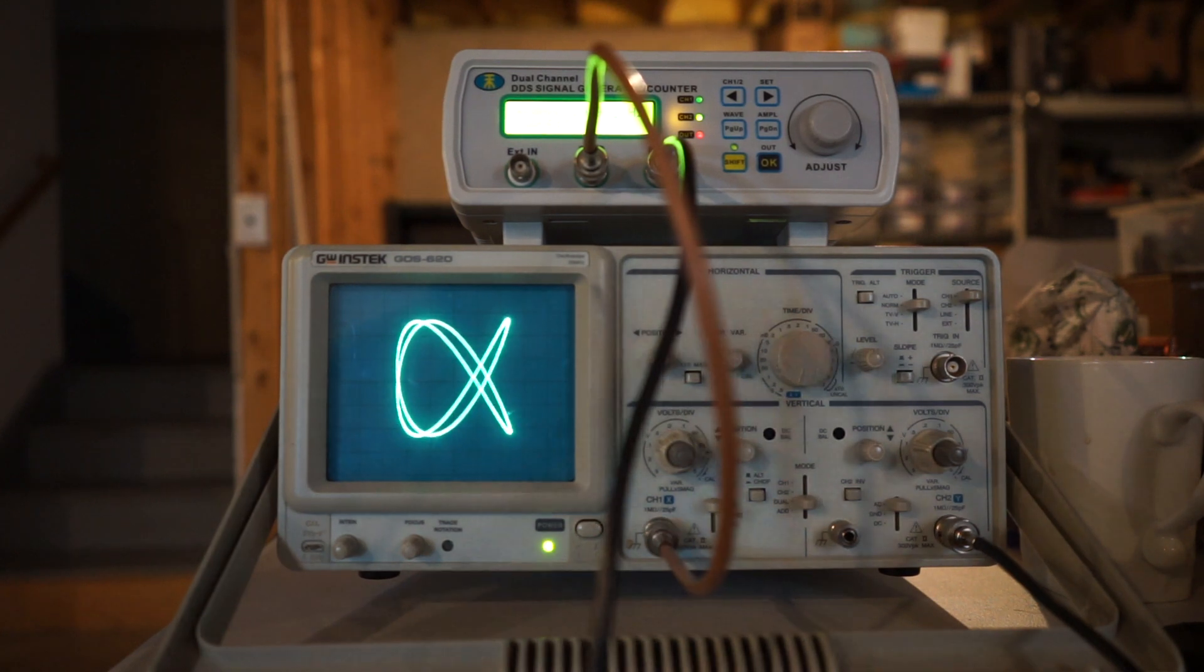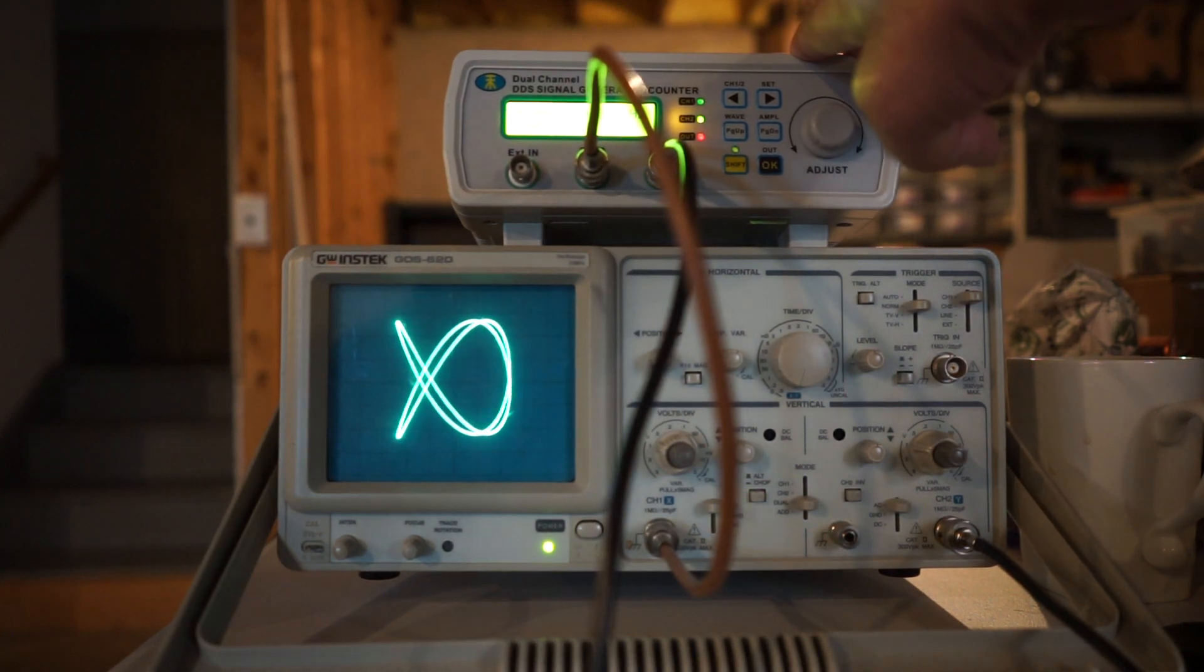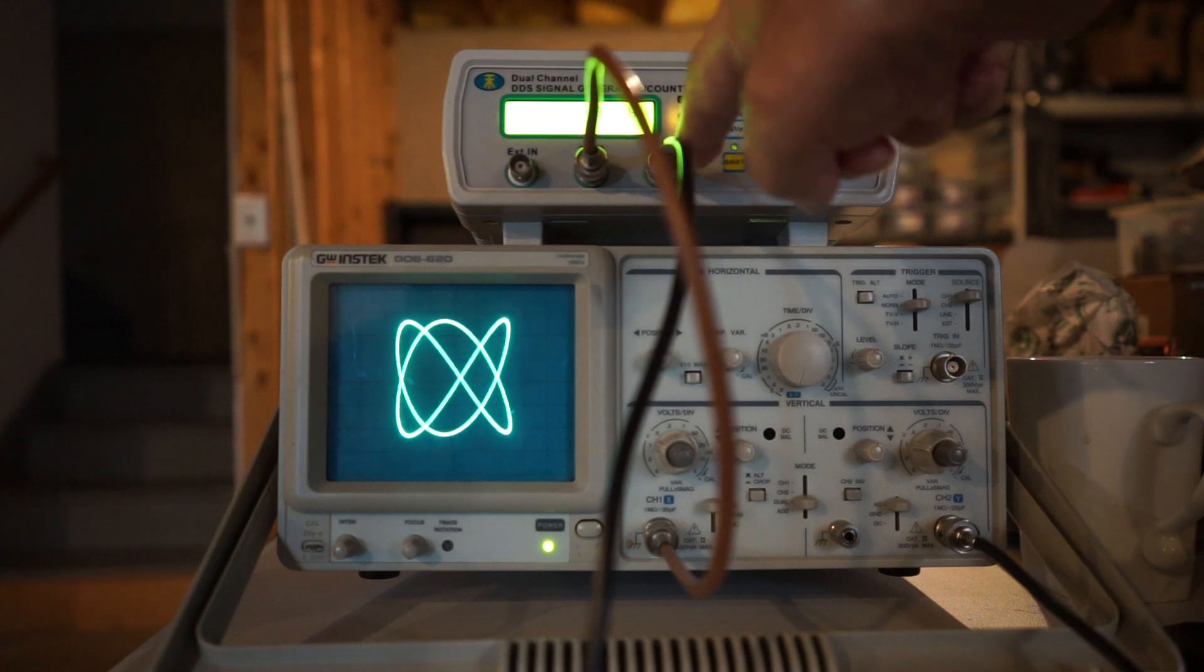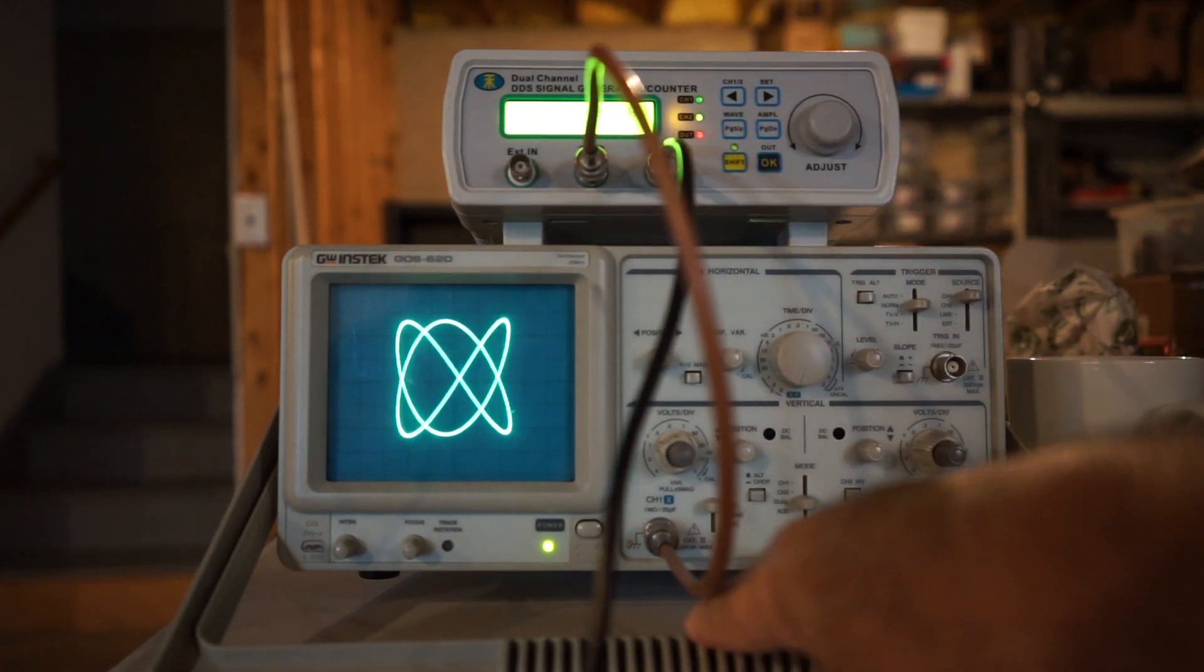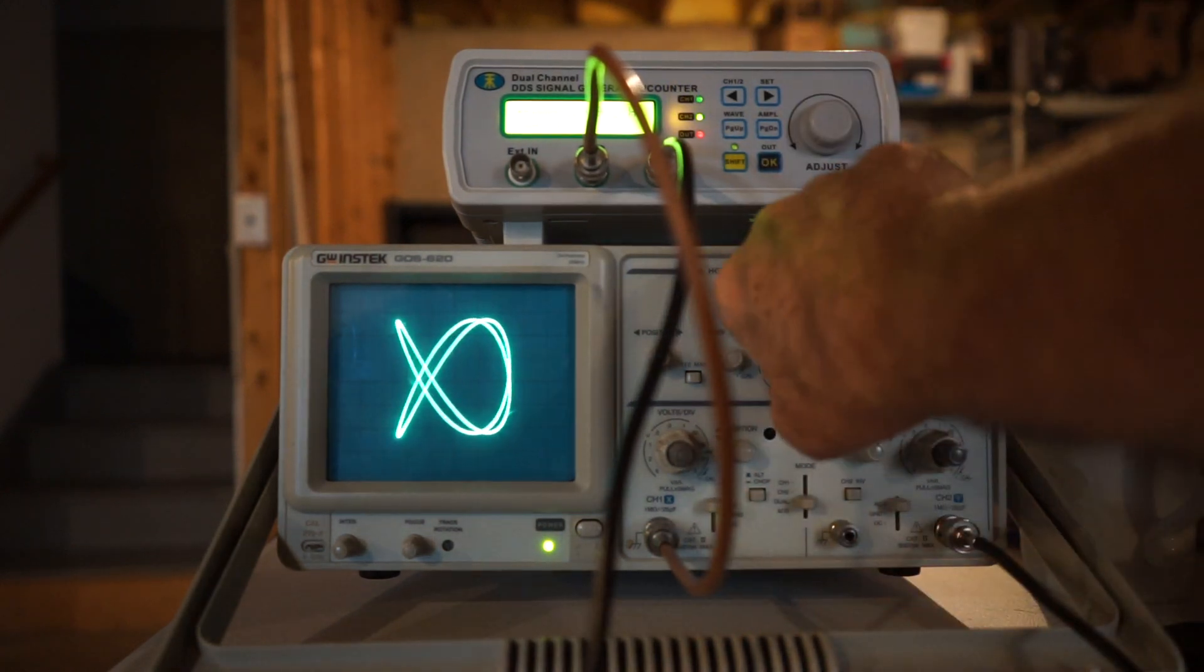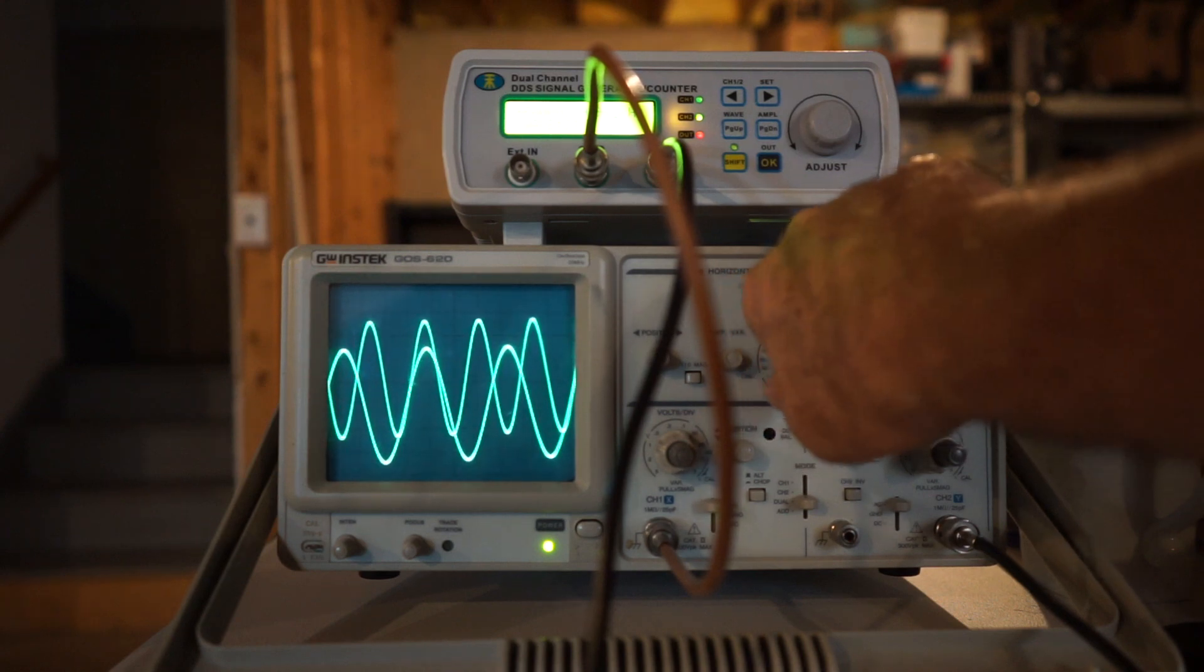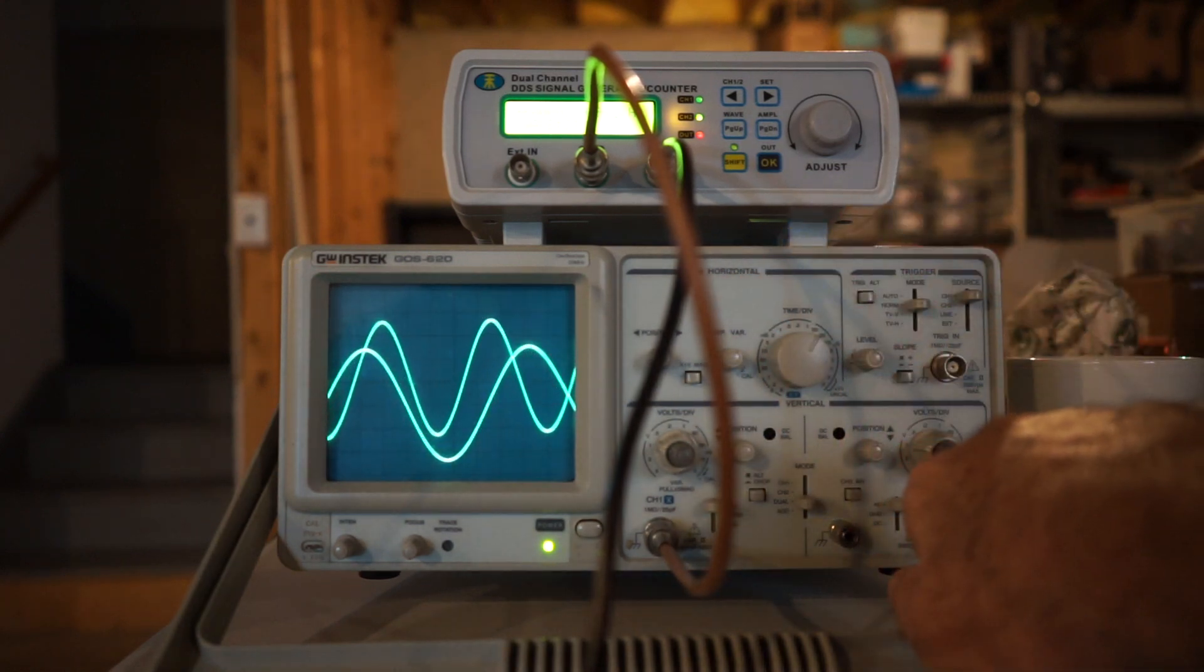All right, so here's the test setup. I've got an oscillator on the top. It has two channels: channel one and channel two. The oscilloscope, I'm going to show what the two waves actually look like.